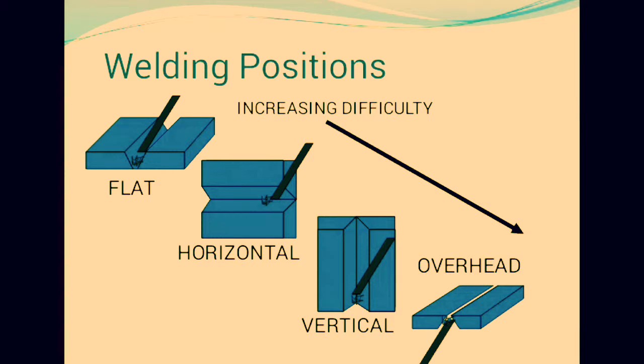There are some welding positions — when we want to join two metal parts, we can use flat shape, horizontal shape, vertical, and overhead positions.